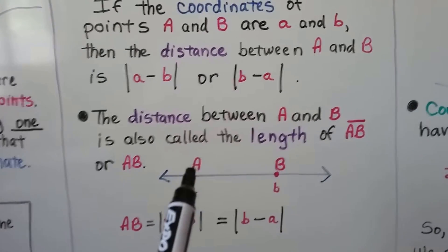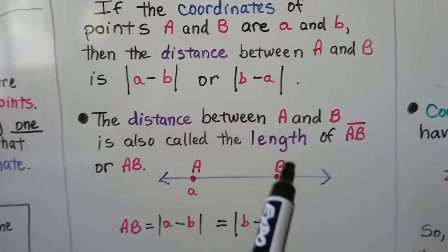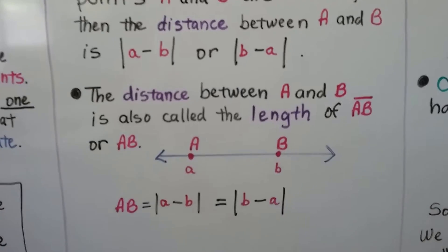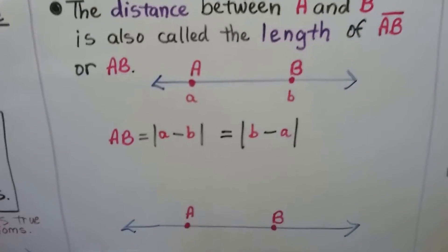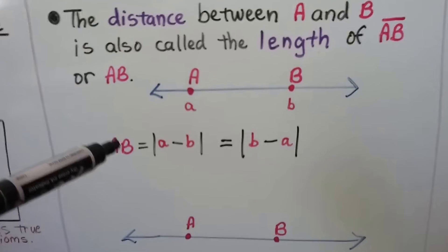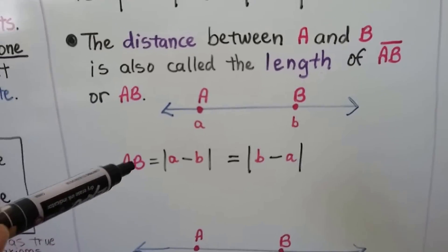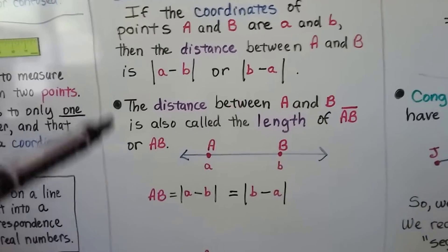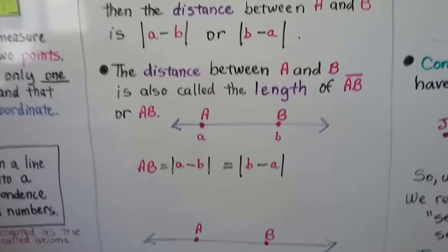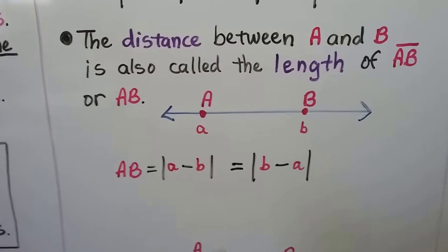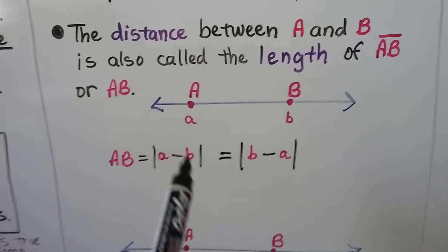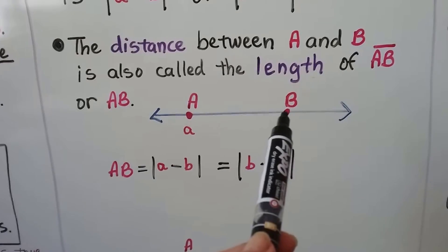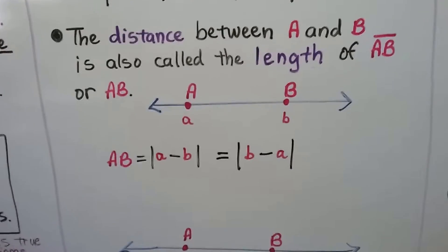The distance between A and B is also called the length of segment AB or AB. So here we've got A and B as the capital letters, and we can say the distance is this AB. So just follow with me in case you're confused. So here's AB, the capital ones. According to this, the distance between them is the absolute value of a minus b or b minus a. Whatever this coordinate is, like a number on a ruler, minus this number on a ruler will give us the distance.